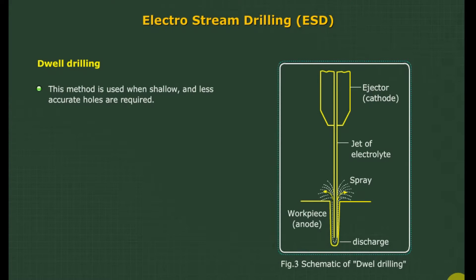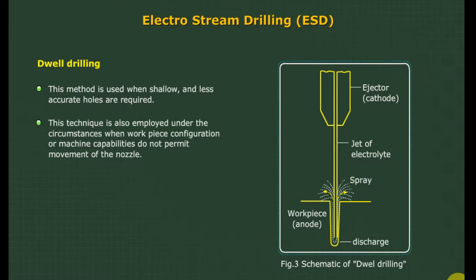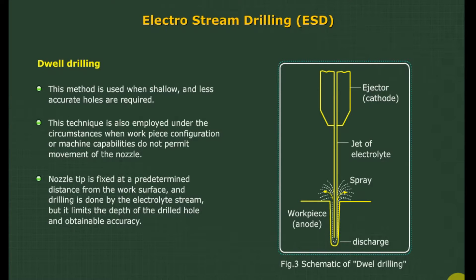Dwell drilling is used when shallow and less accurate holes are required. This technique is also employed when the workpiece configuration or machine capabilities do not permit movement of the nozzle. The nozzle tip is fixed at a predetermined distance from the work surface and drilling is done by the electrolyte stream. However, it limits the depth of the drilled hole and the obtainable accuracy.